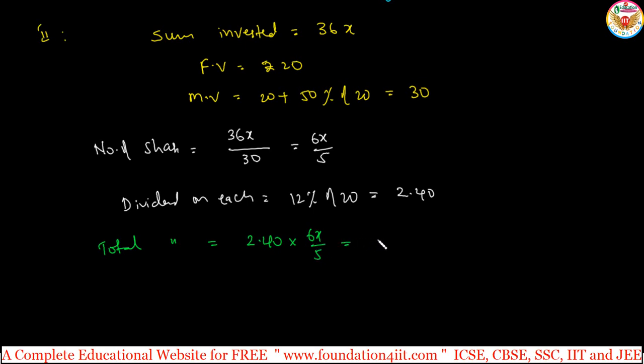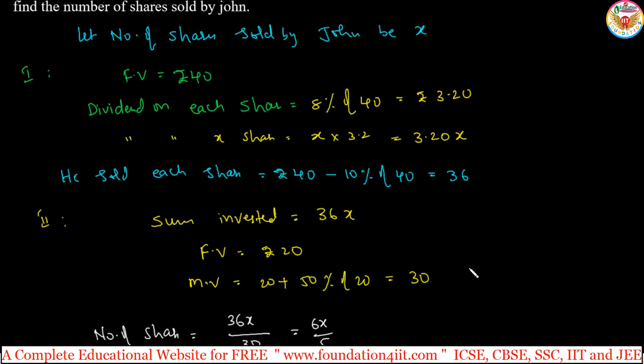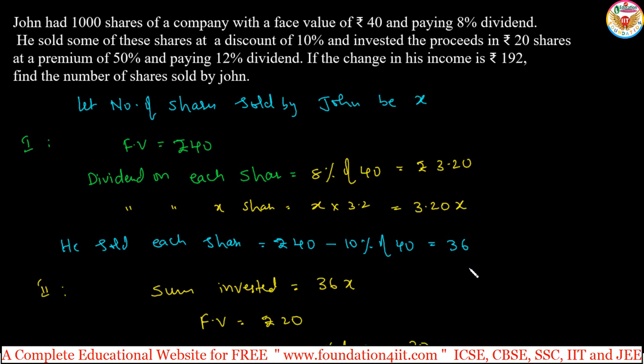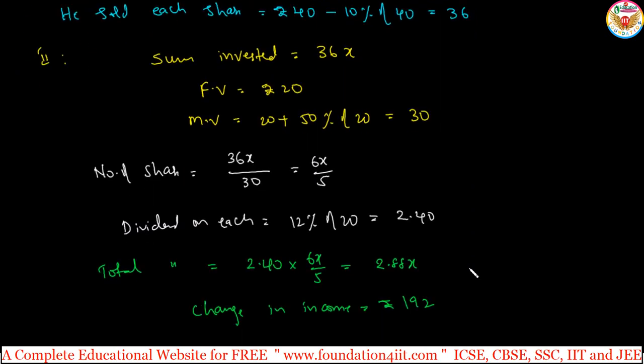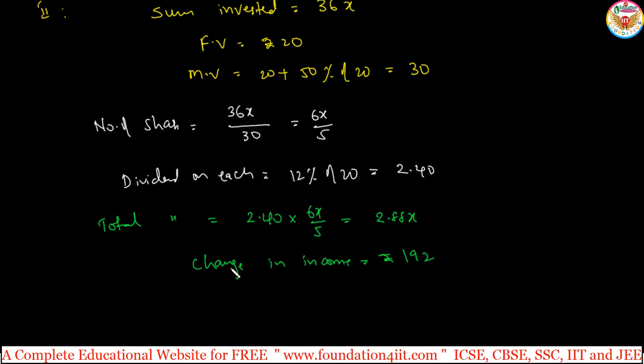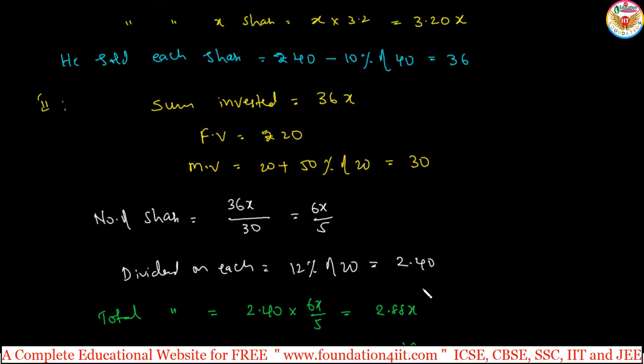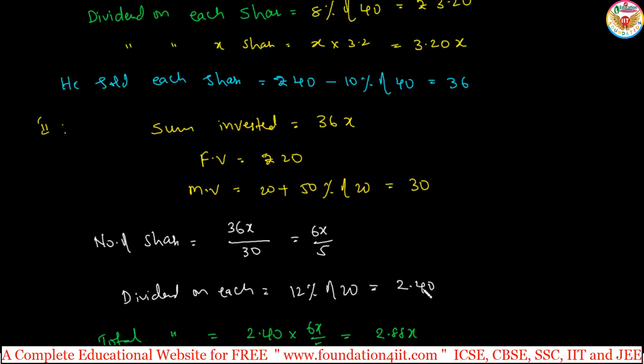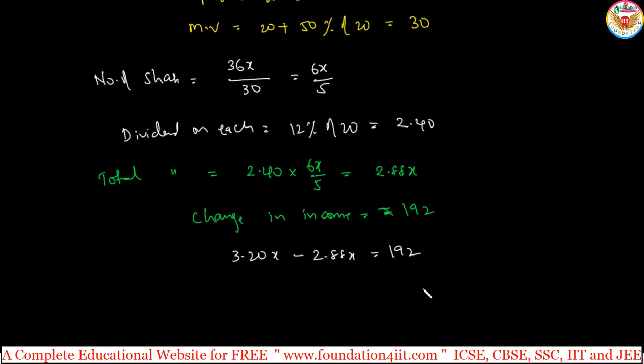2.40 into 6 by 5 is 2.88X, the final calculation. Change in income is 192 is given in the question. Change in income is equal to rupees 192, according to the problem. The change in income is 192. Both the cases, it is the total dividend 2.88, previous is 3.20X minus 2.88X. This is the difference, that is equals to 192.